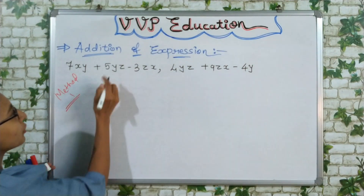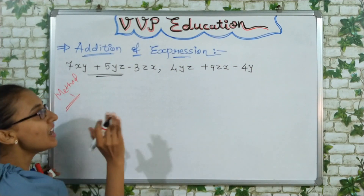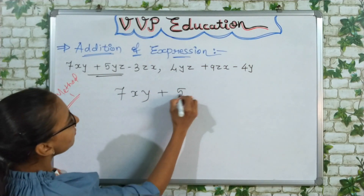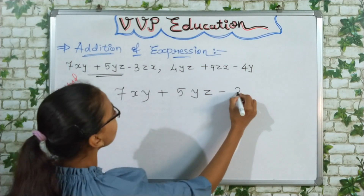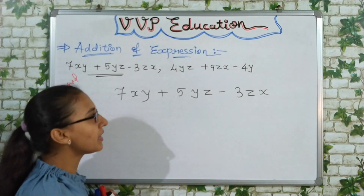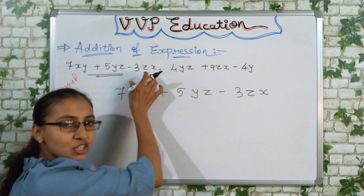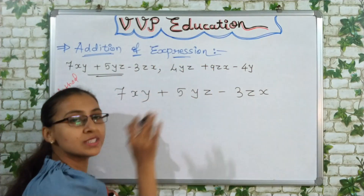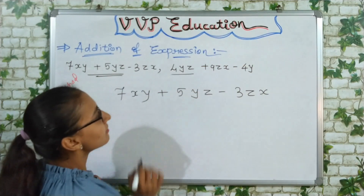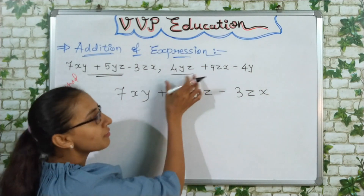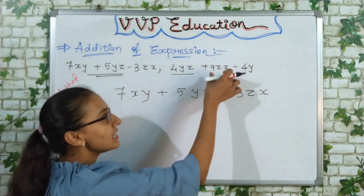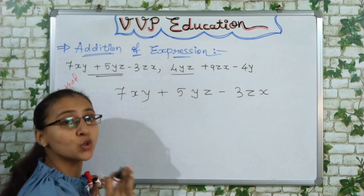So in method one, you write the first expression as it is — here I have 7xy plus 5yz minus 3zx. Now for the second expression, you need to find the like terms corresponding to each term in the first expression. So 4yz — this and 5yz are like terms. And 9zx — so 9zx and minus 3zx are like terms.